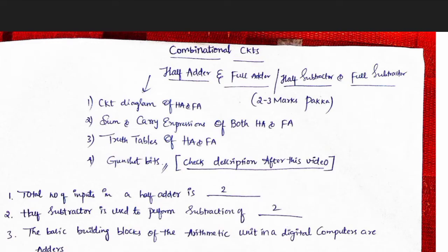We will be able to make the bits of half adder and full adder. We will be able to use a circuit diagram, truth tables, and sum and carry expressions of half adder and full adder. In the description and comment section, we will provide the PDF with the circuit diagram, truth tables, and sum and carry expressions.